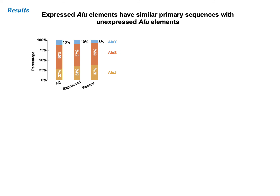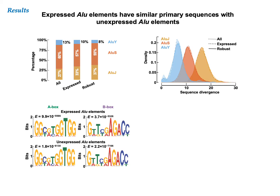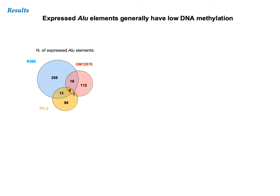We examined various sequence features to distinguish expressed Alu elements from unexpressed ones. We tested the composition of Alu families, sequence divergence, strengths, and the positions of A-box and B-box, but none of these could distinguish expressed from unexpressed elements. Because the sequence and genomic features were not overly predictive of expressed Alu elements, we turned our attention to epigenomic features: DNA methylation, histone modification, and chromatin accessibility.